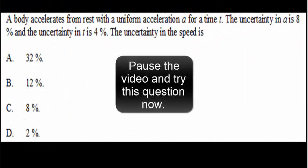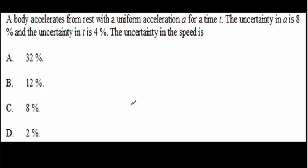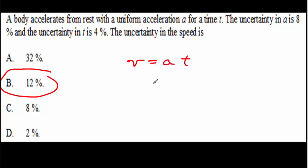Here's a second question. Pause the video, read it over, try it out for yourself, then come back for the answer. Hopefully you said 12%. The reason is that speed equals acceleration times time, so we're multiplying and need to add the percentage uncertainties. It's going to be 8% for the acceleration plus another 4% for the time, giving a grand total of 12%.